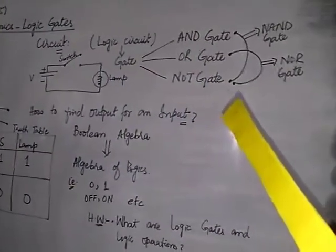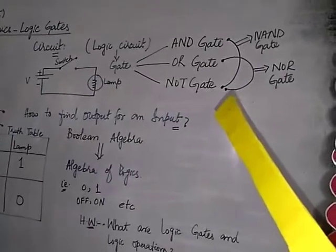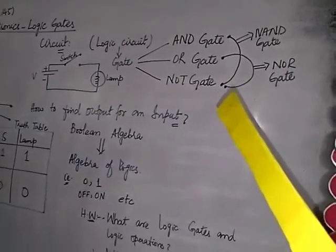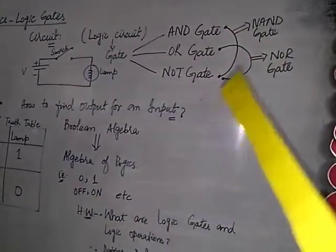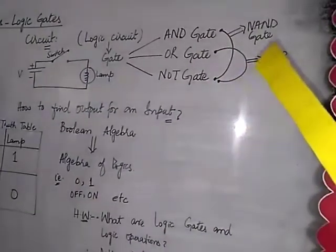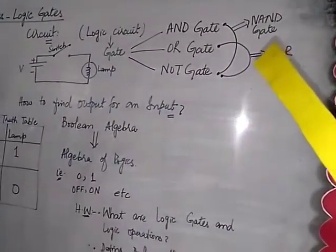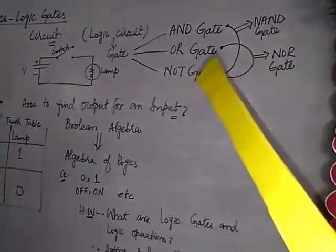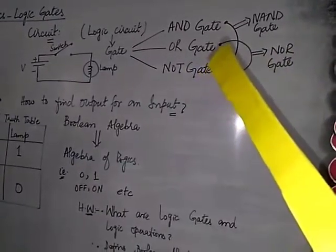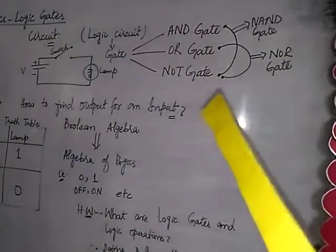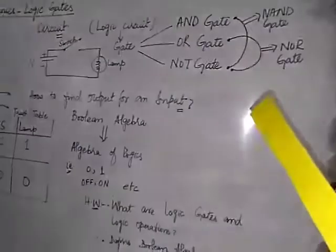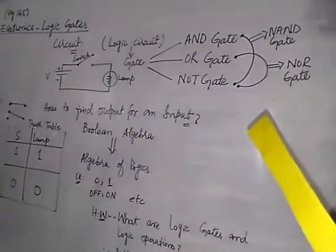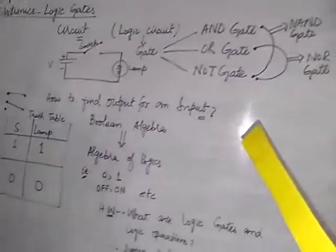Furthermore, we shall read about the combination of AND and NOT gate which is known as NAND gate. We will learn about these gates in the next lecture.